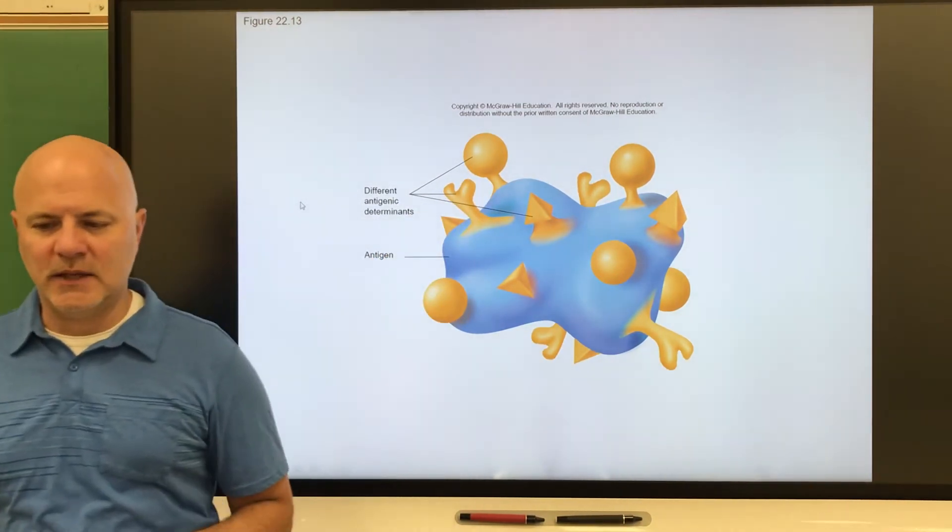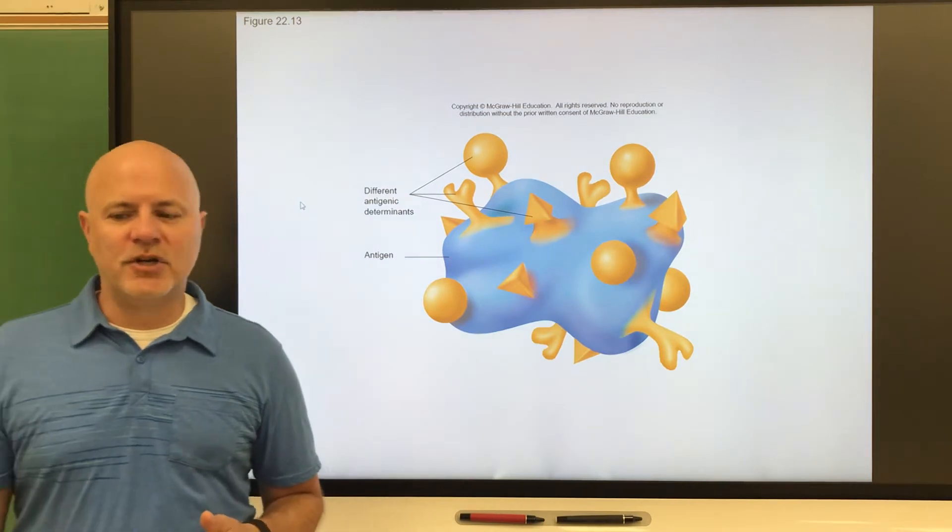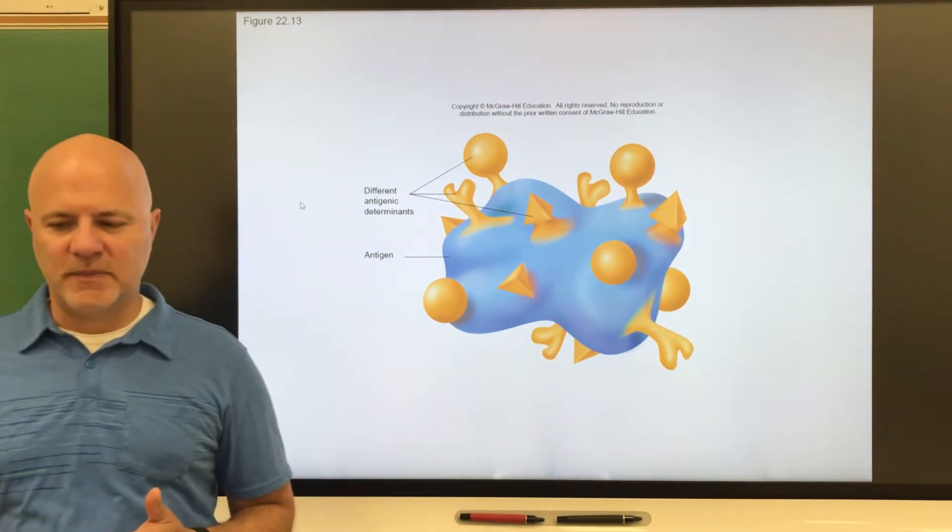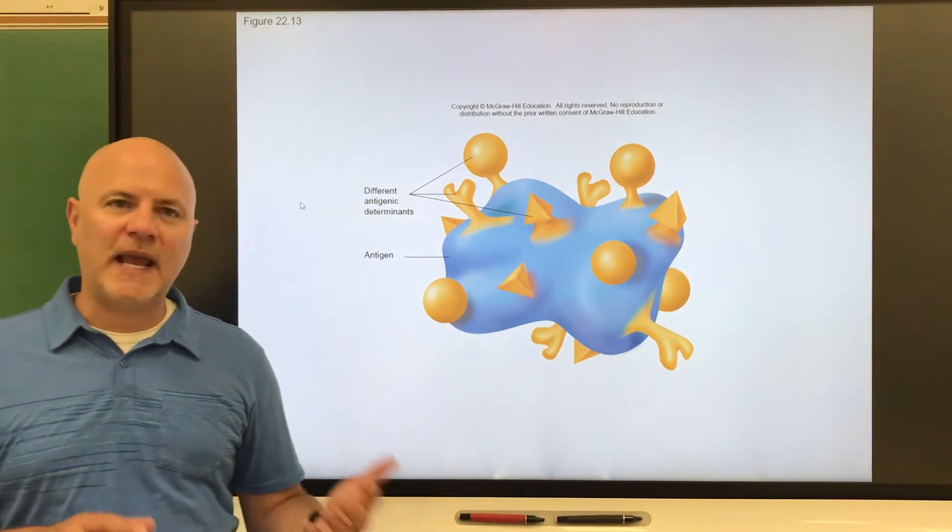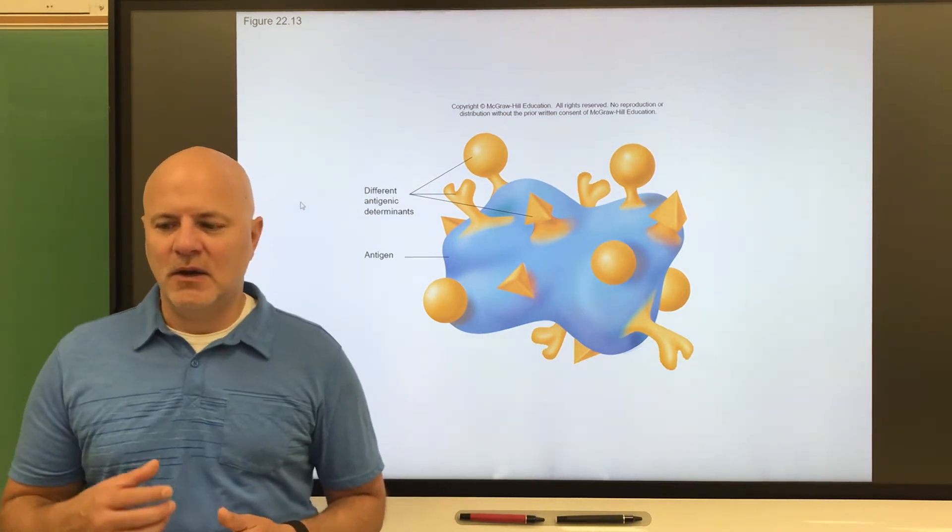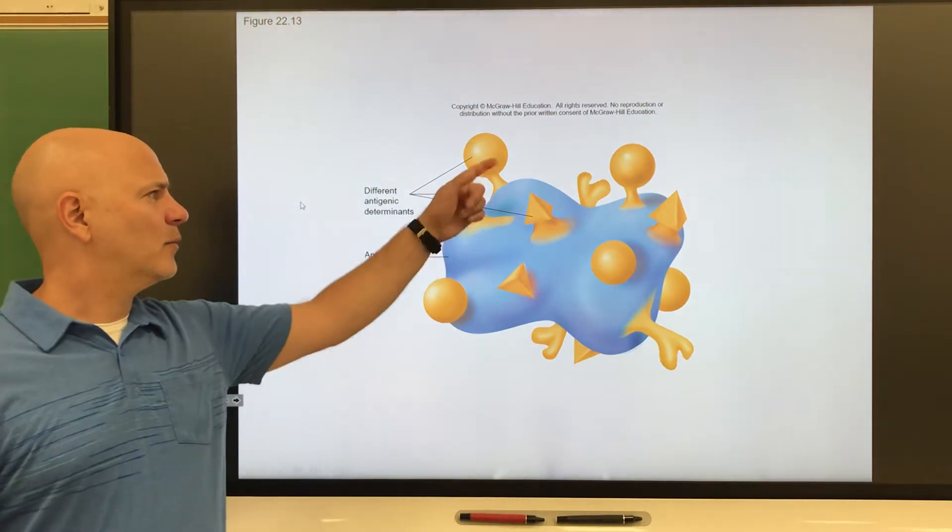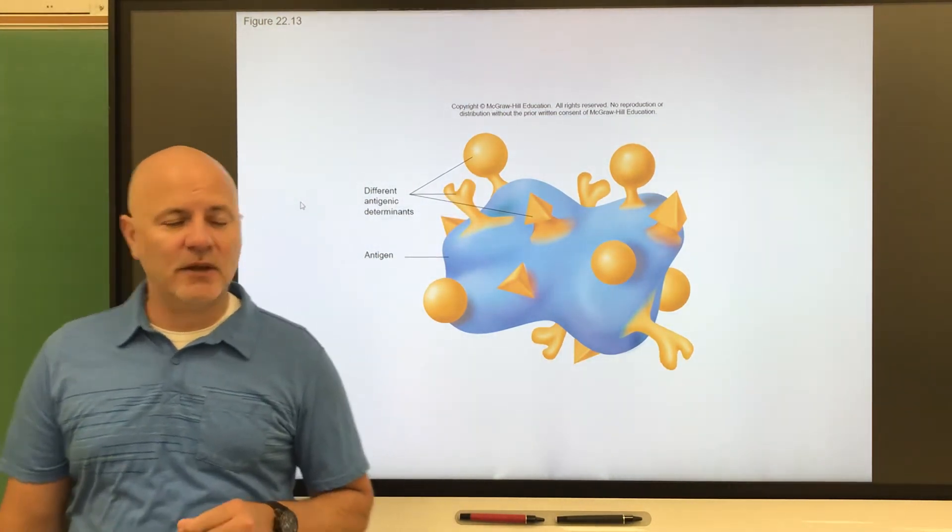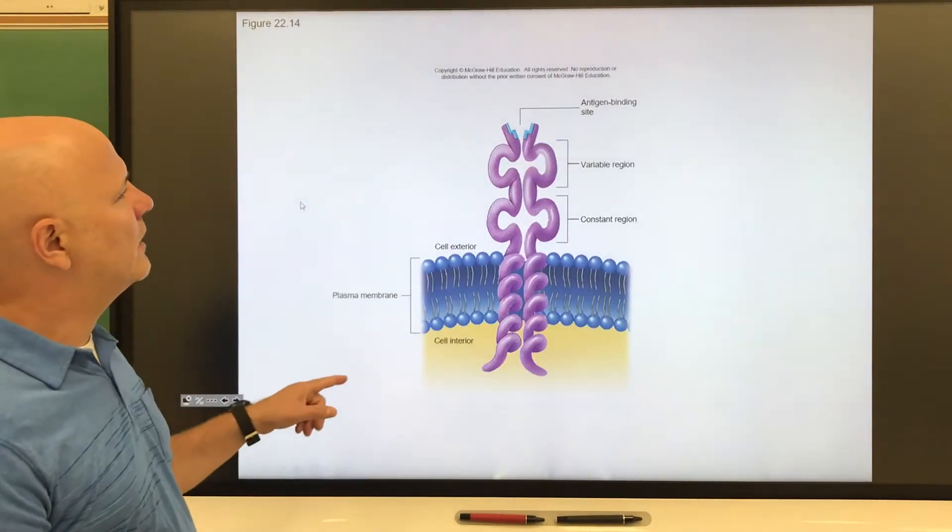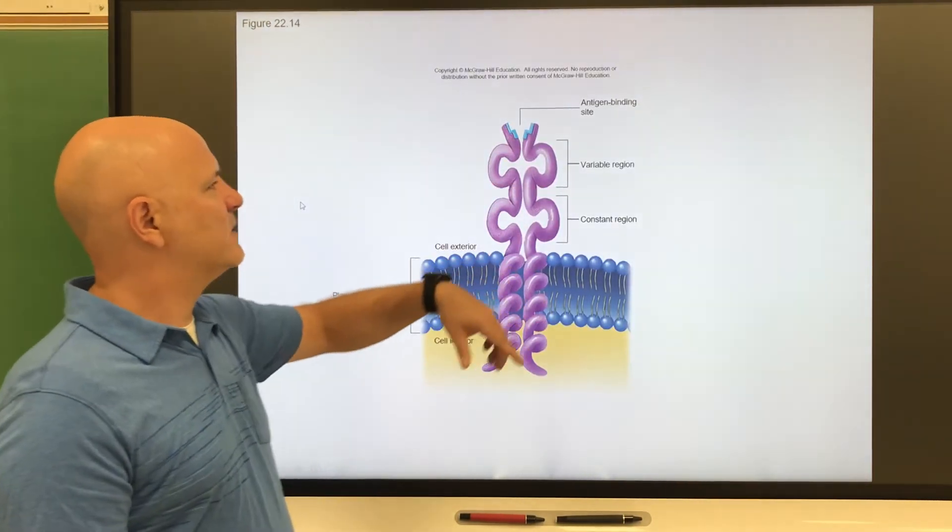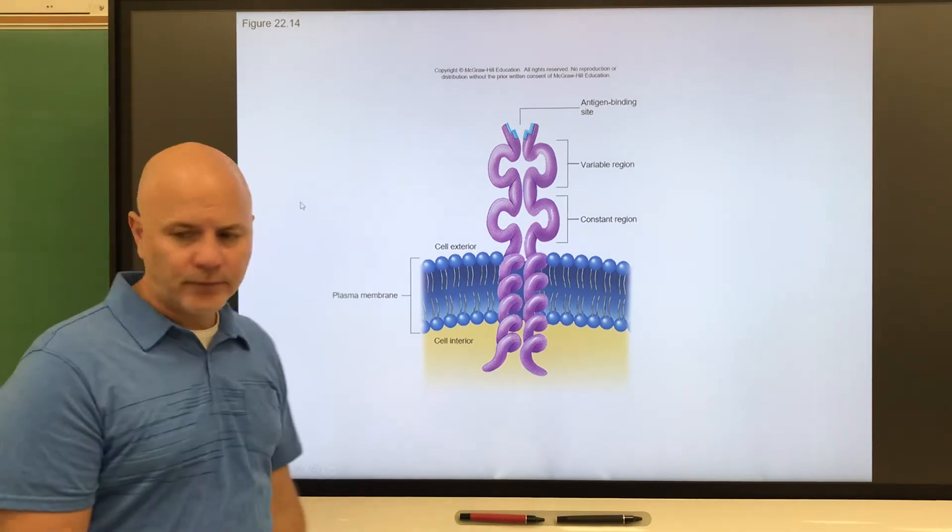This is the only region on the antigen that stimulates an immune response. Here the antibodies or the lymphocytes are going to bind to these things. Whatever that particular part of that molecule is, this is shown there, the antigen binding site right there.